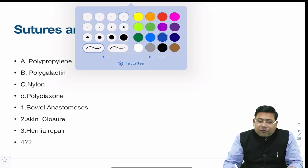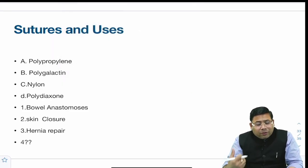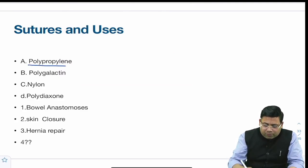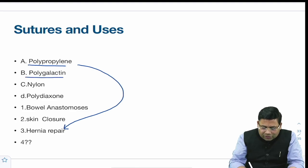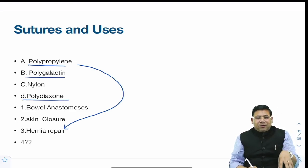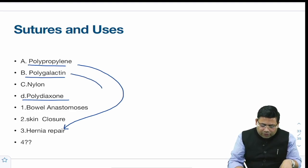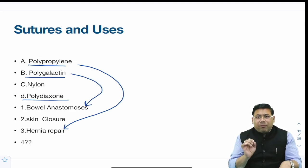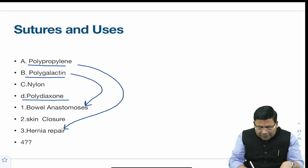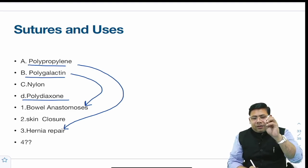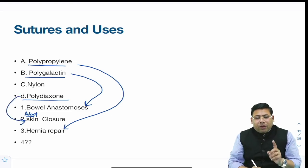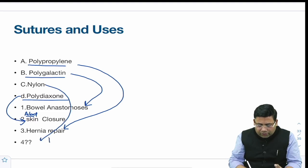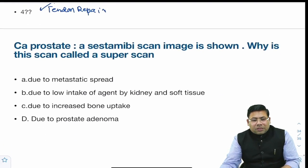There was a direct question on sutures. Polypropylene (Prolene) is the ideal suture for hernia repair. Polyglactin 910 is preferred for bowel anastomosis; polydioxanone (PDS) can also be used. For abdominal closure, polydioxanone is preferred. Nylon is the suture of choice for tendon repair.